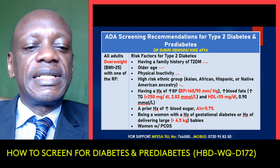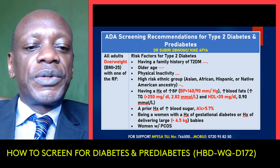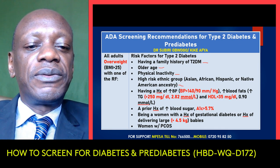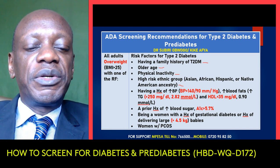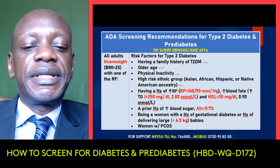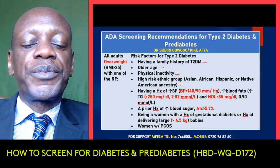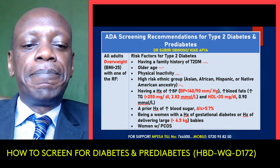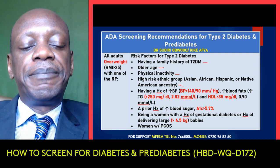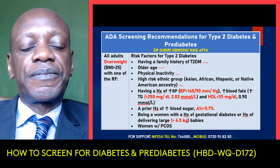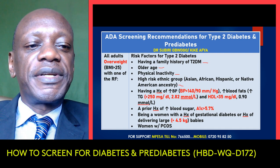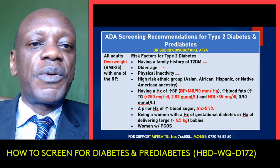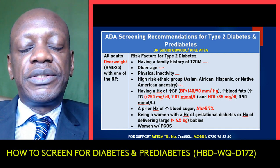If you have a past history of raised blood glucose — especially above 5.7 — you are also at risk. If you are a woman with a history of diabetes in pregnancy, or if you've delivered babies bigger than 4.5 kg, or women with polycystic ovary syndrome — any of these combined with being overweight means you need to be screened, as it increases your risk.